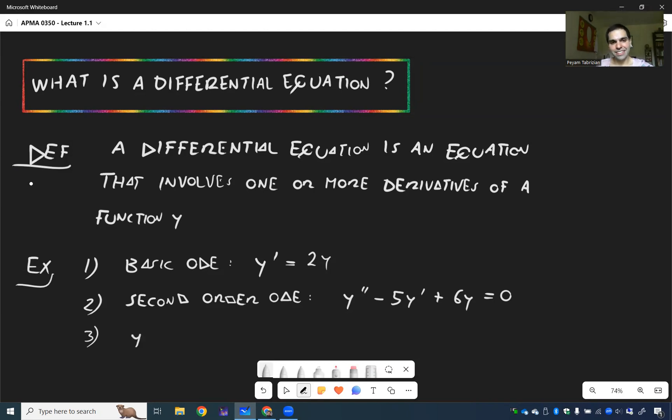So just to be extra spicy, let's do Y triple prime squared equals sine of Y cubed plus Y plus an extra T squared. So this is a legit differential equation, probably too hard for us to solve, but it deserves some love as well.